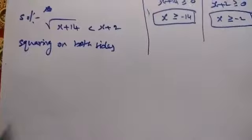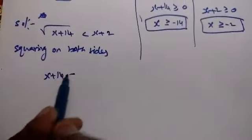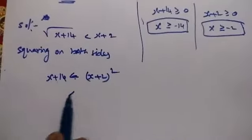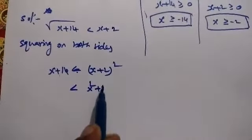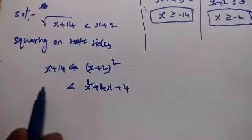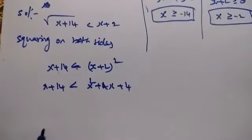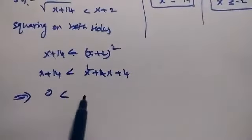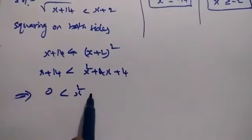We can remove the root. x plus 14 less than x plus 2 whole square. Using a plus b whole square equals a squared plus 2ab plus b squared, we get 0 less than x squared plus 4x minus x.